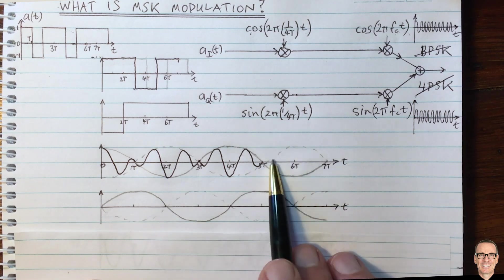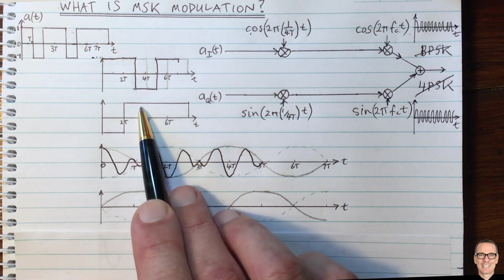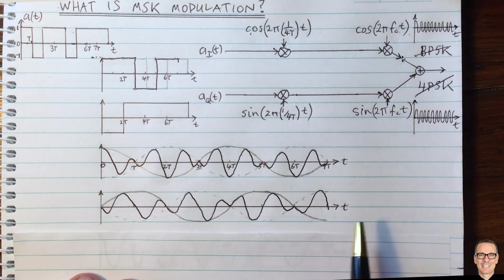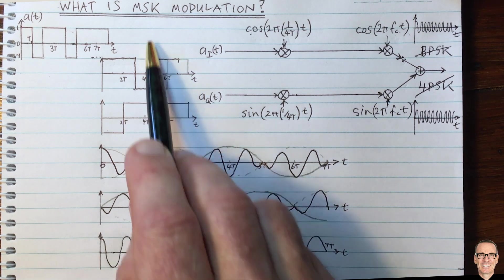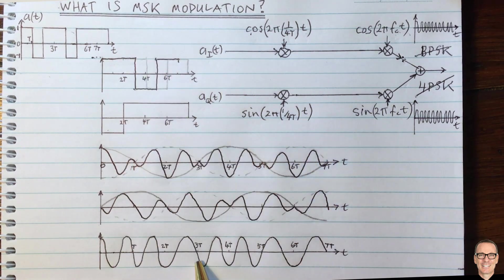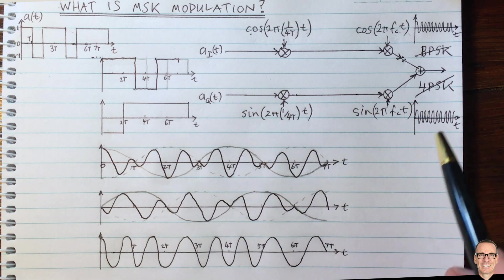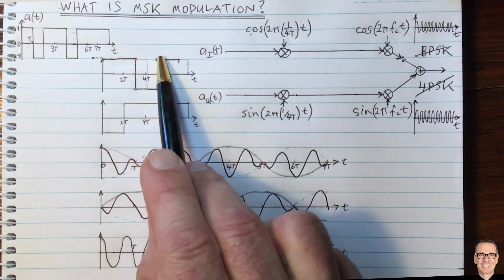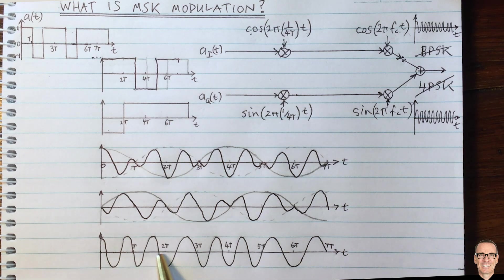Doing this for all time periods and also for the sine wave — multiplying the even data sequence by the sine — and then adding the cosine and sine components together, we get the resultant MSK waveform. And here we start to see minimum shift keying clearly: this waveform is very smooth. Compared to BPSK or 4PSK, which had sharp transitions at the data symbol timings, MSK has very smooth transitions.